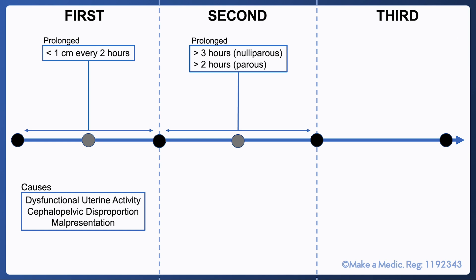Causes include quite often dysfunctional uterine activity, it can be due to the shape of the pelvis itself, and it can also be due to the perineum being quite tough and resistant and not actually loosening up quite as much as you would expect for the head to be able to be delivered.